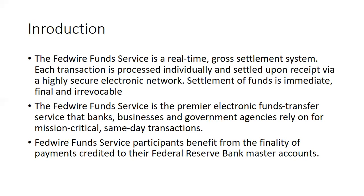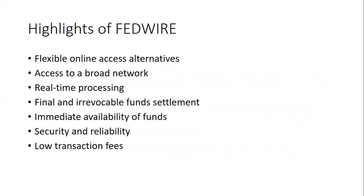We've already covered real-time gross settlement before, but let me explain it once more after covering the highlights of the FedWire system. The key highlights are: flexible online access, access to a broad network, real-time processing, final and irrevocable settlement, immediate availability of funds, security and reliability, and low transaction fees.